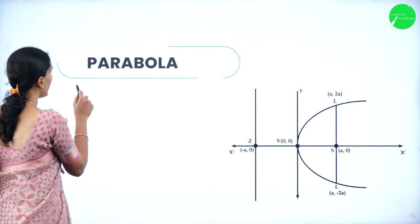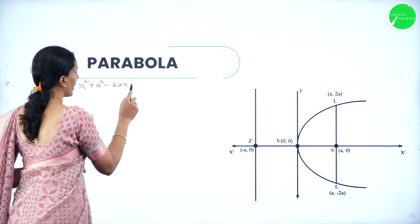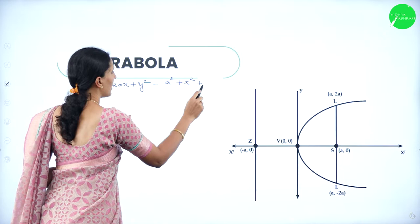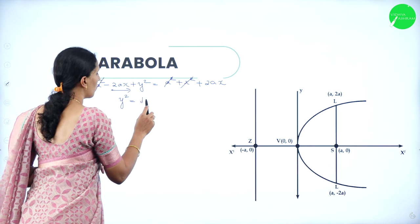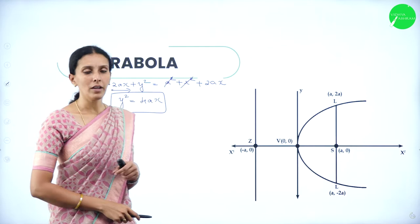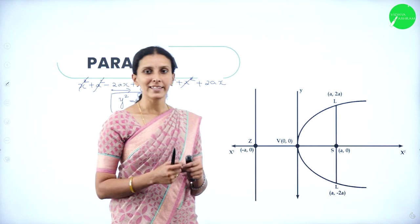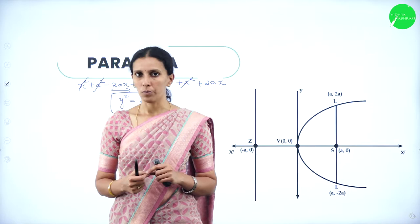Expanding: x² + a² − 2ax + y² = a² + x² + 2ax. Cancelling x² and a² from both sides, and shifting 2ax, we get y² = 4ax. This is the standard form of the equation of a parabola.